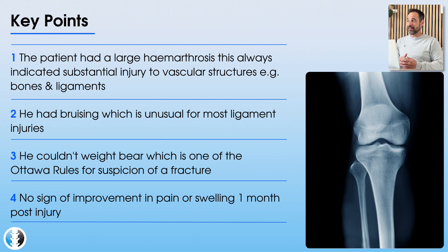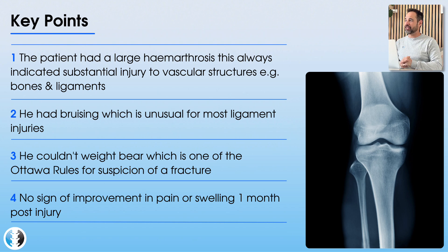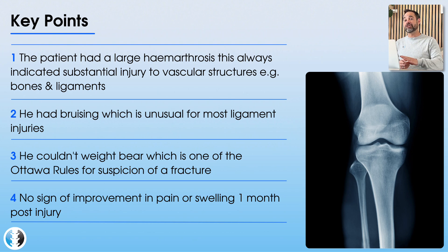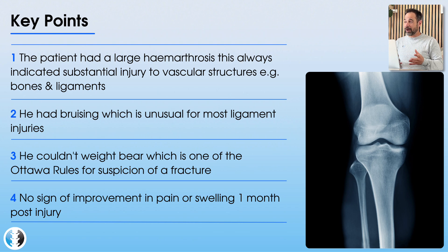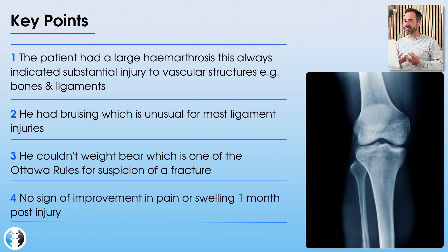The fact that he cannot weight bear at all after four weeks is still really concerning. The inability to weight bear right at the beginning of his injury is one of the Ottawa rules that leads us to suspect a fracture — the patient can't weight bear immediately after injury nor for four weight-bearing steps in the emergency department, therefore we should x-ray. Still one month post-injury, with significant pain, significant swelling, and inability to weight bear, we would imagine some settling of symptoms if he had an ACL injury. These signs are all quite suspicious for a fracture.